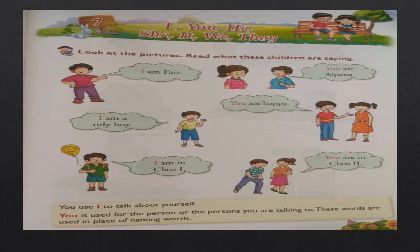These words are used in place of naming words. So instead of using the naming words again and again, instead of repeating them, we use words such as I, you, he, she, it, we, they. We use I when we talk about ourselves, and when you are talking to a person, we use the word you.